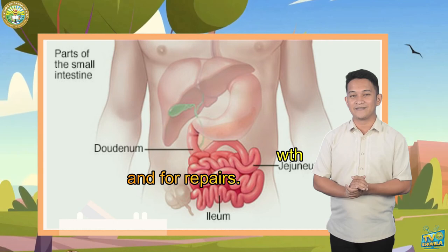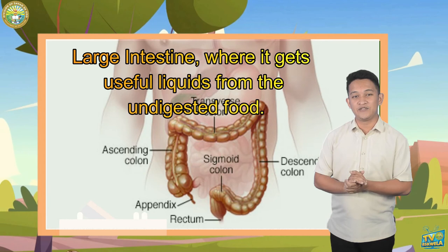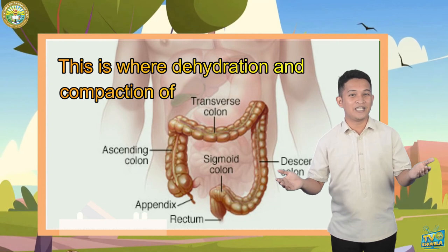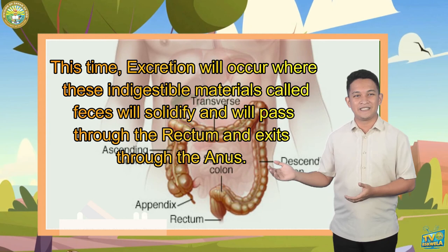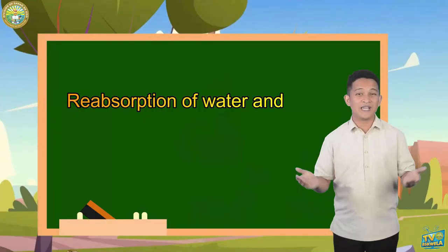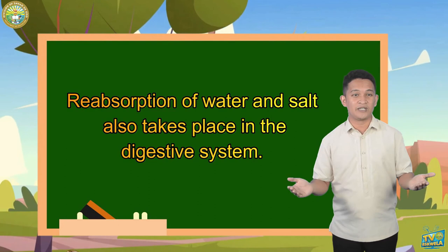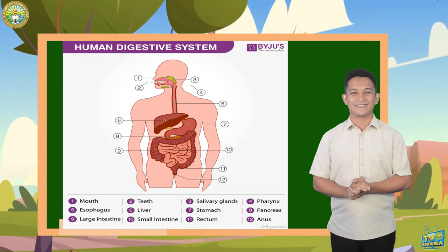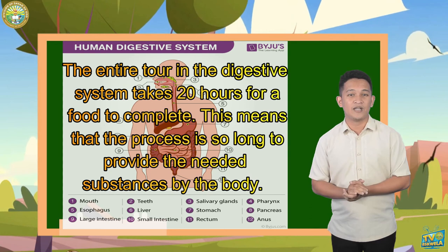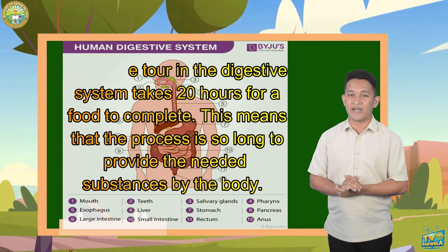Next is the large intestine, where useful liquids are extracted from undigested food. This is where dehydration and compaction of indigestible materials happen. Excretion then occurs — these indigestible materials called feces solidify and pass through the rectum and exit through the anus. Reabsorption of water and salt also takes place in the digestive system. The entire journey through the digestive system takes about 20 hours for food to complete — the process is long in order to provide the needed substances to the body.